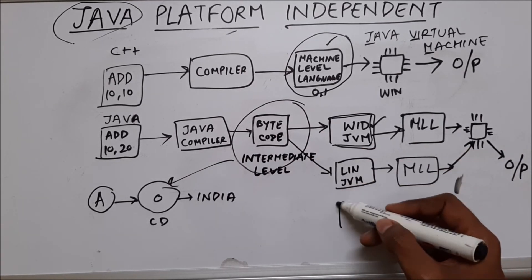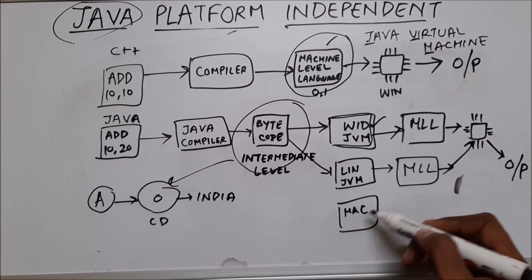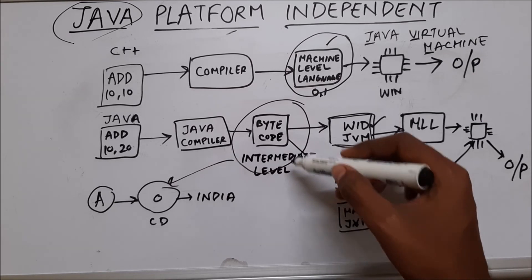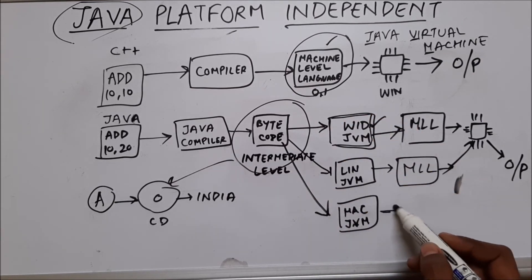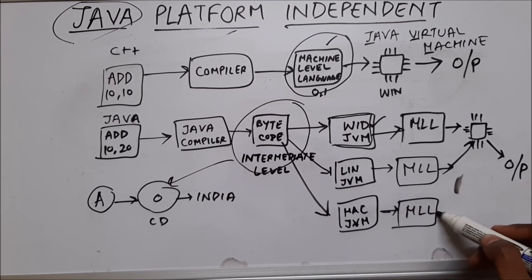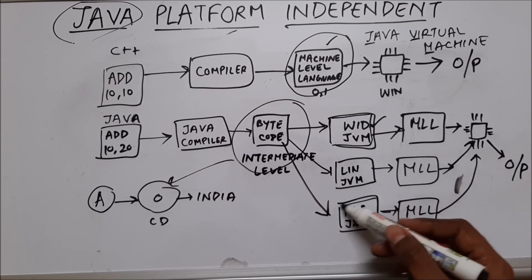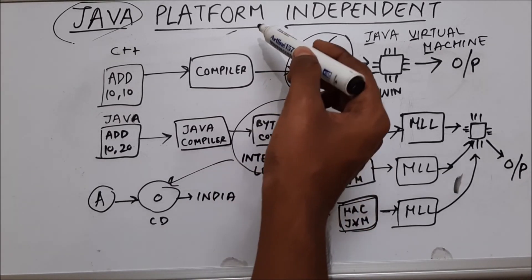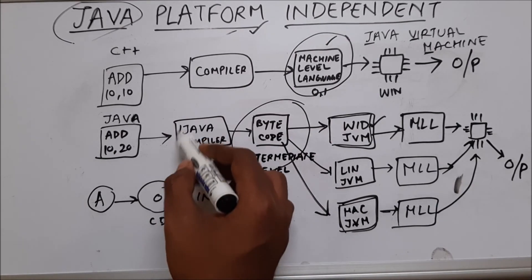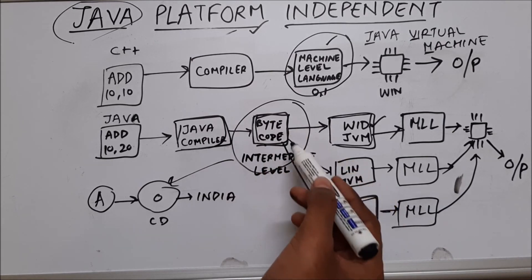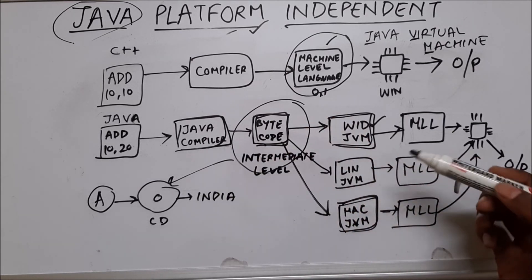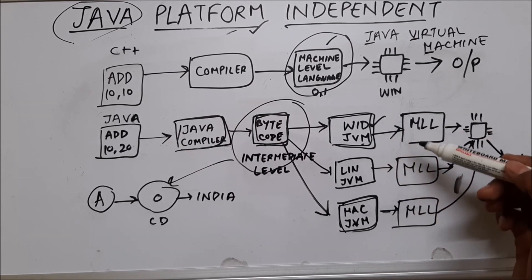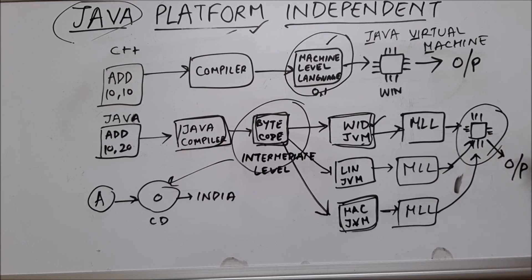If it is put inside a Mac OS machine, we download and install JVM for Mac. This JVM understands the bytecode, converts it into machine level language, which is understandable by the Mac microprocessor and gives us an output. So Java compiler gives us bytecode, which can be placed in any system. That system's suitable Java Virtual Machine converts it into machine level language, and the processor gives us the output — this is how Java is platform independent.